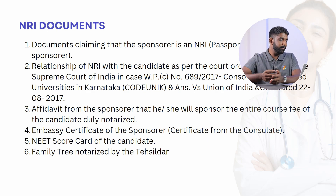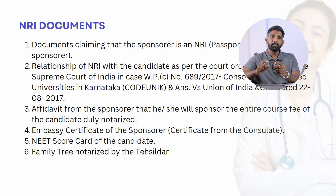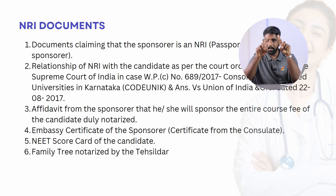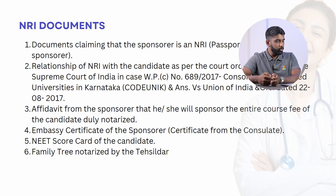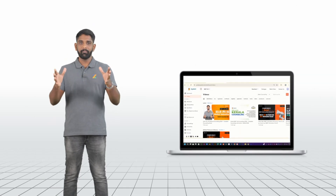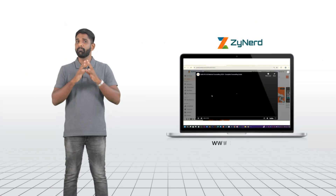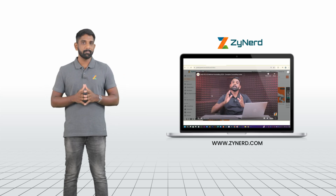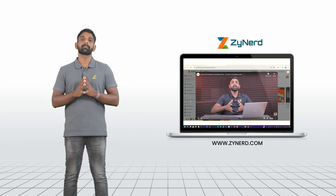Last year in Round 3, there was a notice stating that a family tree is also required. You have to obtain the family tree from the tahsildar and produce it along with the other documents. So these are the complete set of documents required for the NRI quota. Hope you enjoyed this short video — to watch the full video, the link is in the description.